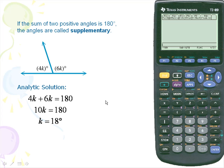We'll combine like terms on the left. We'll divide by 10 for a result of 18. Next we'll back substitute for 2 angle measures of 72 and 108.